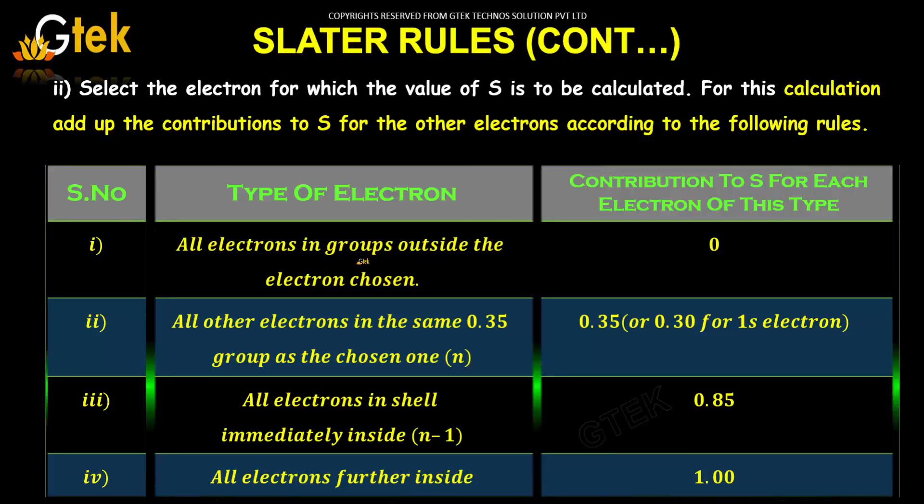All electrons in groups outside the electron chosen. So, the contribution to S for each electron of this type is 0.